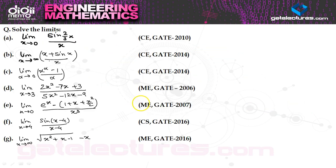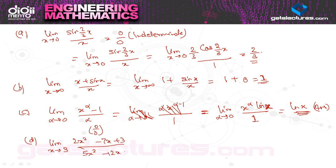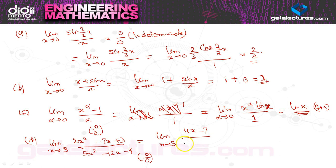Example (d): limit x→3, (2x² − 7x + 3) / (5x² − 12x − 9). If we plug in x=3, we get 0/0 — an indeterminate form. Apply L'Hôpital's rule: differentiate numerator and denominator to get (4x − 7) / (10x − 12). Substituting x=3: (12−7)/(30−12) = 5/18. The answer is 5/18.